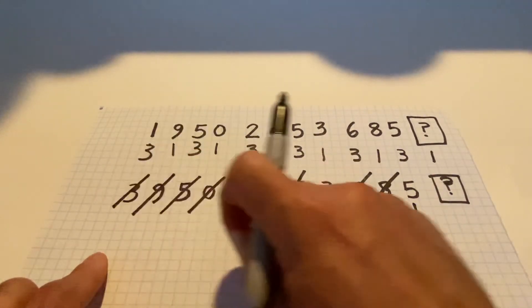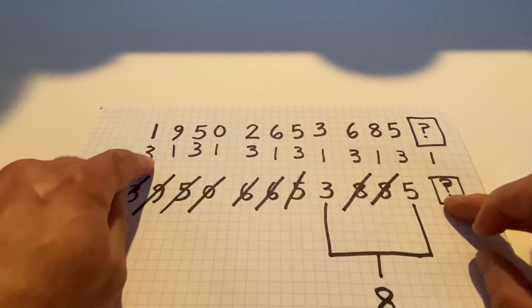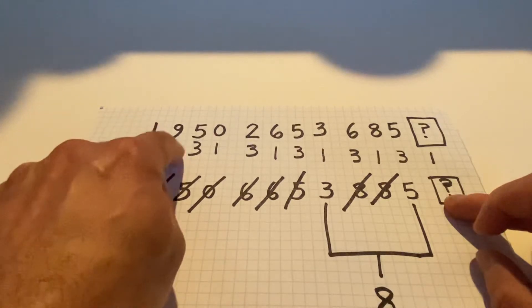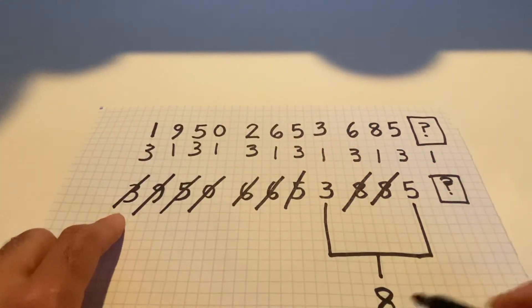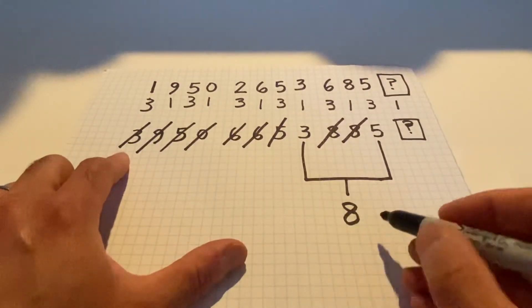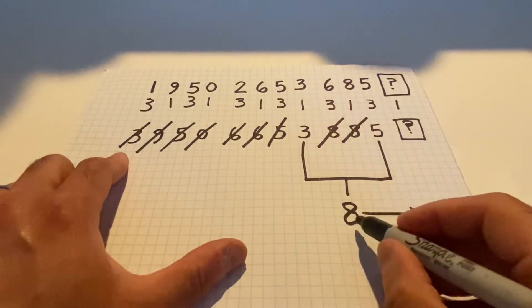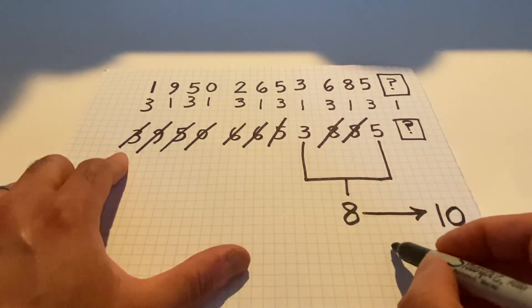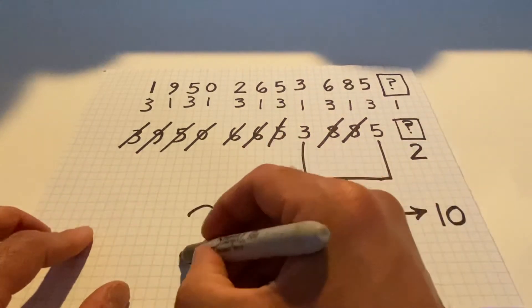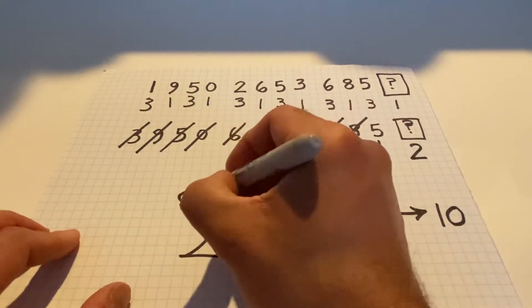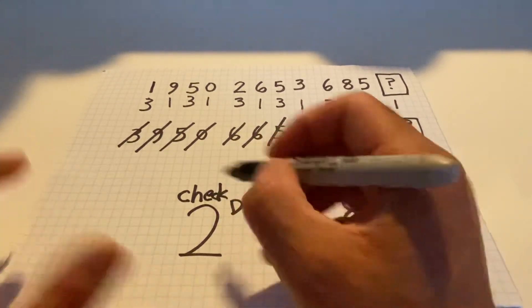We know that when we add that, the summation, the modified sum after multiplying the digits by 3, 1, 3, 1, 3, 1, and so on, we know that that has to be a multiple of 10. So the eight that we produced, how much more to get to 10? To go from eight to 10, we need a two. So the check digit has to be a two. And we already knew that the check digit is a two.